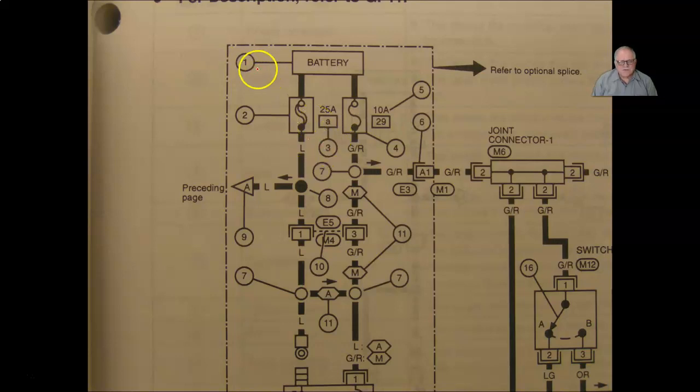The numbers, the lines with the circles, if you go to the next few pages in the service manual, it'll explain what each one of these are. The L that is blue. G slash R is going to be green slash red wire.